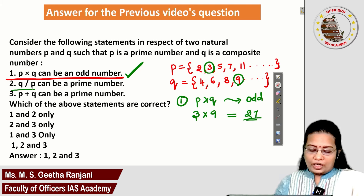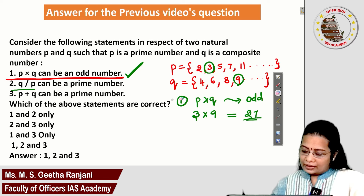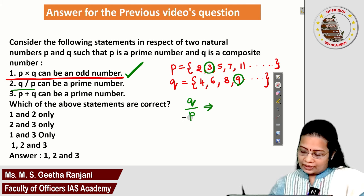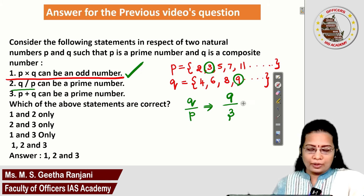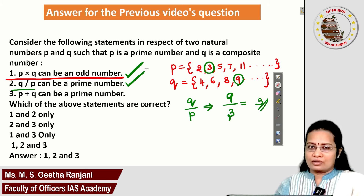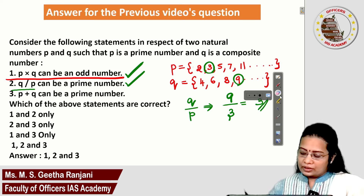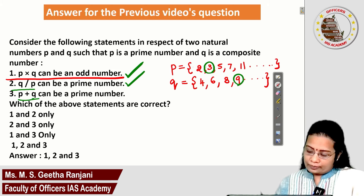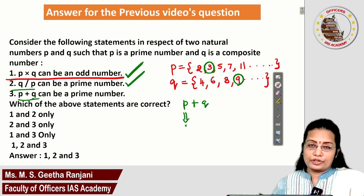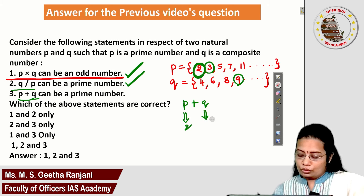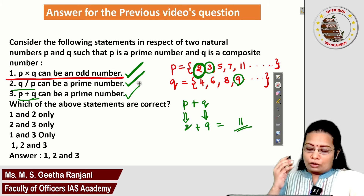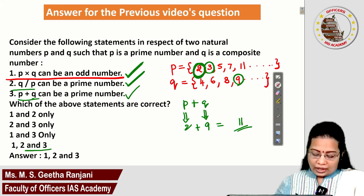Statement 2: Q÷P can be a prime number. Using Q=9 and P=3, we get 9÷3=3, which is prime. So Statement 2 is also correct. Statement 3: P+Q can be a prime number. Taking P=2 and Q=9, we get 2+9=11, which is definitely prime. So Statement 3 is also correct. Therefore all three statements hold, and the correct option is that statements 1, 2, and 3 are all correct.